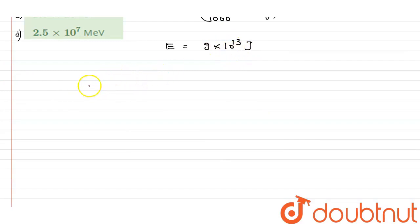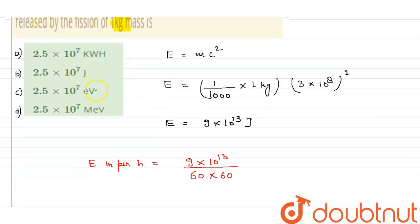So I want to calculate energy in per hour. So that is 9 times 10 to the power 13 divided by 60 times 60. And if I want that my energy should now be in watt hours.